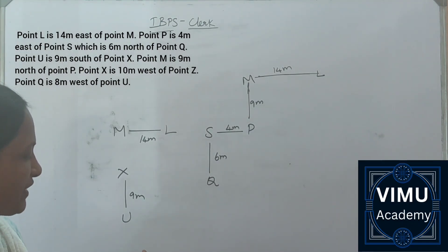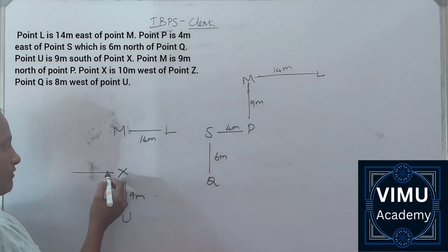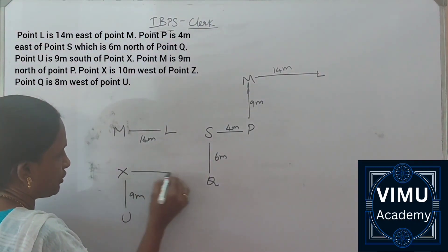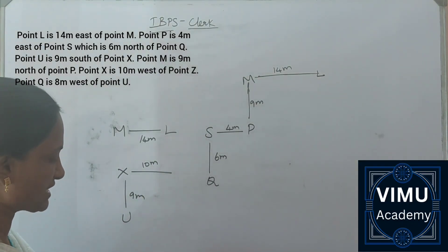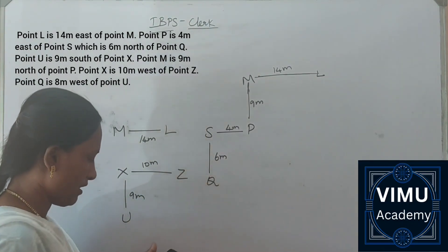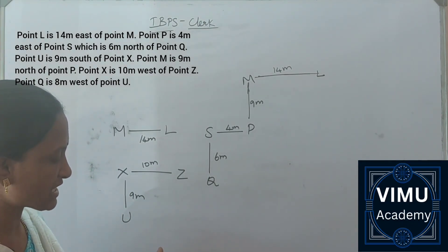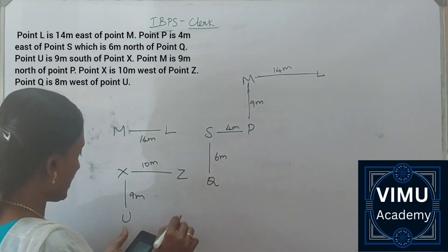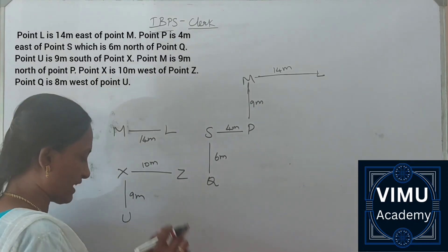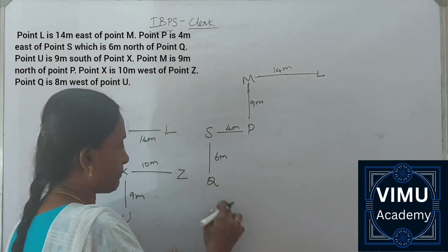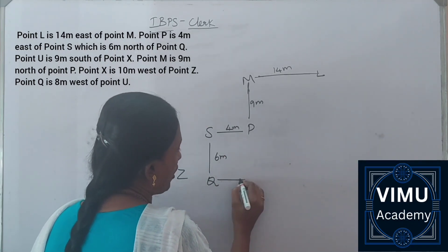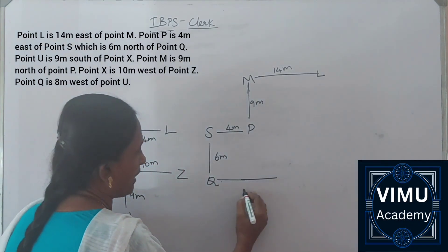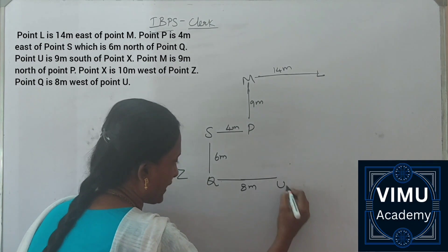Point X is 10 meters west of point Z. Point Q is 8 meters west of point U. So Q is 8 meters west, and this is already 4 meters, so this makes 8 meters west of point U.